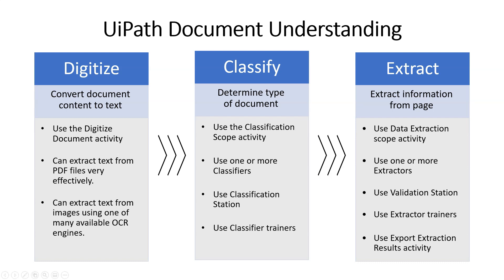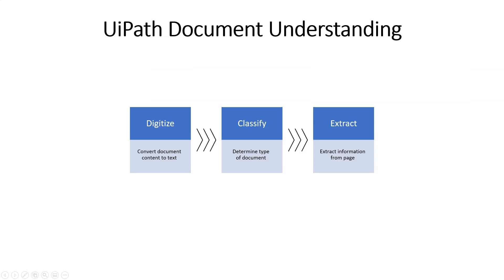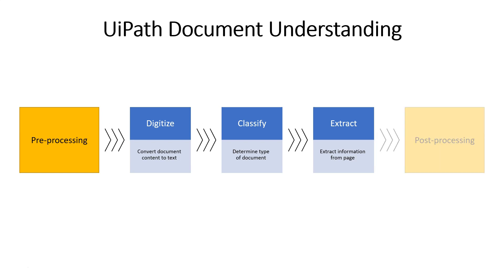If we zoom out just a little bit: before the digitize part, of course, there is a pre-processing part. And what does that mean? Well, it just means that the documents we need to look at need to be made available to our automation, and this can happen in any number of ways. I'll keep it very simple in the videos to come, as I will with the post-processing. Because post-processing is what you do with the extracted information, and that's really beyond the scope of these videos.